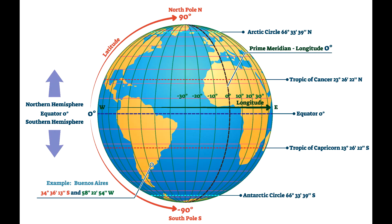The equator, which is located at zero degrees, divides the world into the northern and southern hemispheres. The Tropic of Cancer and Capricorn signify the areas either side of the equator and exhibit hot tropical climates and jungles. The Arctic Circle and Antarctic Circle are the next important lines of latitude.